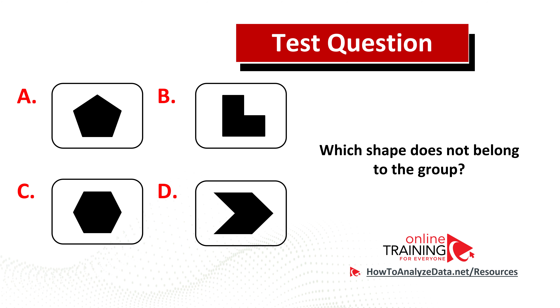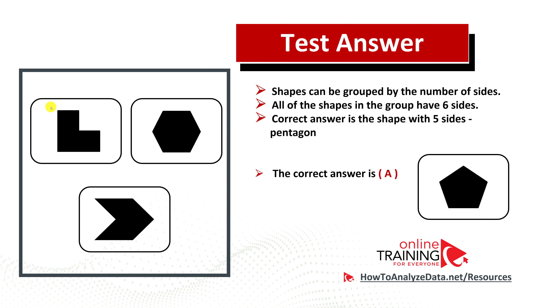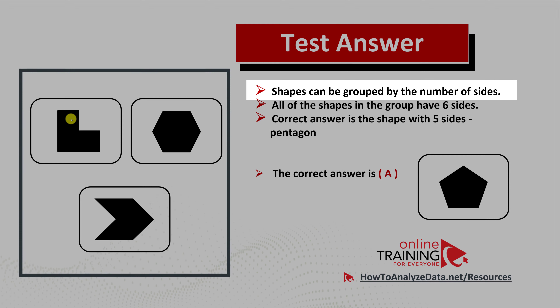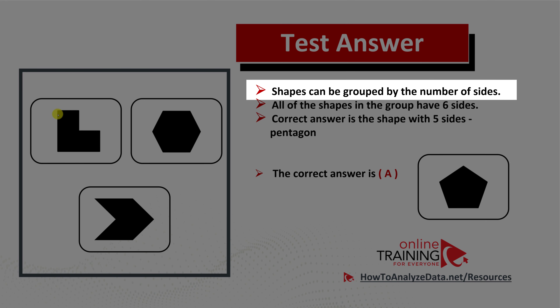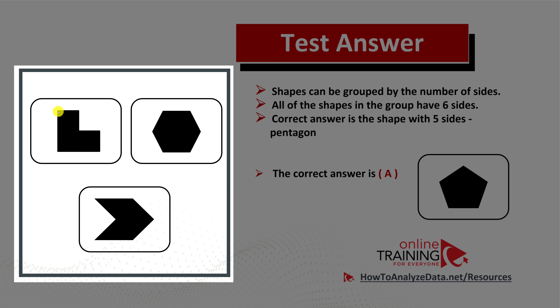Did you come up with the answer? Let's continue and see how we can solve this challenge and get to the solution together. In this case, shapes can be grouped by number of sides. For example, you see that all the shapes on the left have six sides. If you count the sides in this shape, you will see that there are six.